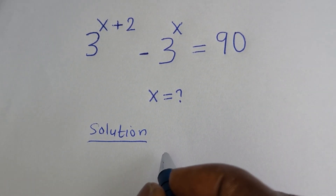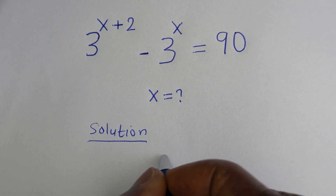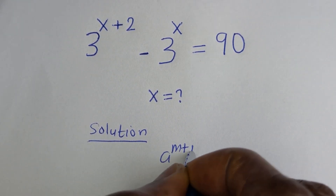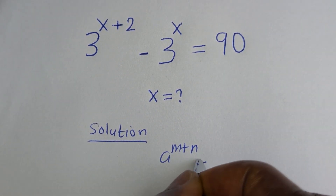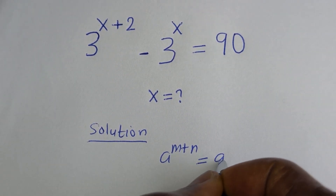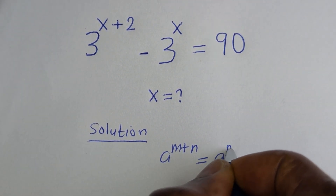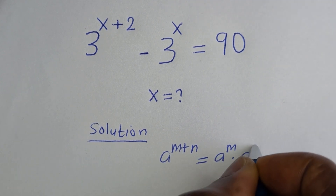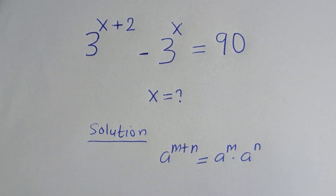Note that if you have A raised to power M plus N, this is equal to A raised to power M multiplied by A raised to power N.